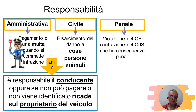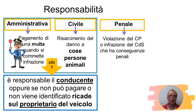Sia per la responsabilità amministrativa che quella civile sono responsabili sia il conducente che il proprietario del veicolo. Il conducente è colui che guida il veicolo, che non necessariamente può essere il proprietario. Se il conducente non può pagare, la responsabilità, sia la multa che il risarcimento del danno, cade e ricade sul proprietario. Per la responsabilità penale invece risponde soltanto chi commette il fatto, nel caso della circolazione dei veicoli, sempre e soltanto il conducente.